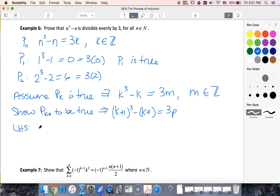So (k+1)³, using binomial theorem, k³ + 3k² + 3k + 1 - k - 1. Let's rearrange this. I want to use this, so I'm going to put those two together. So k³ - k, moving that over. Now I'm going to have plus 3k² + 3k plus 1 minus 1 cancels.